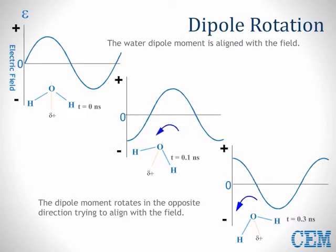We can illustrate dipole rotation using a water molecule and a sine wave, which illustrates the positive and negative side of the electromagnetic field. We show the water molecule at three points in time. At time zero, the molecule is aligned with the field in that the negative electrons of oxygen are aligned. However, just one-tenth of a nanosecond later, the field — which is moving at the speed of light — has shifted and the molecule is not aligned, so it will rotate to attempt to realign itself.